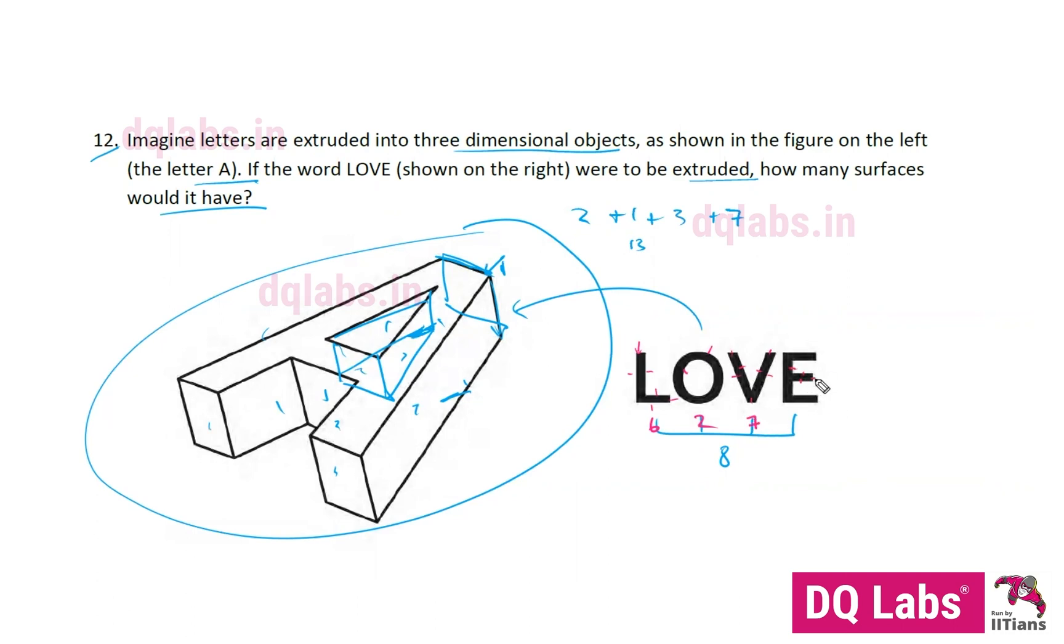Eight plus six is 14. 14 plus 2 is 16. 16 plus 7 is 23. 23 plus 12 is 35, which is the answer for question number 12.